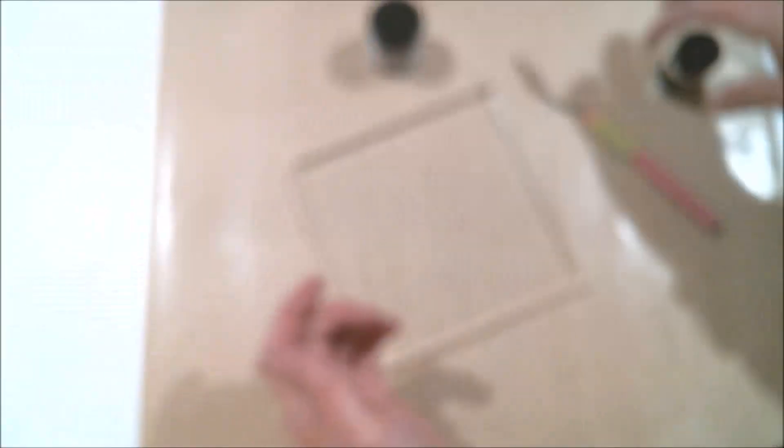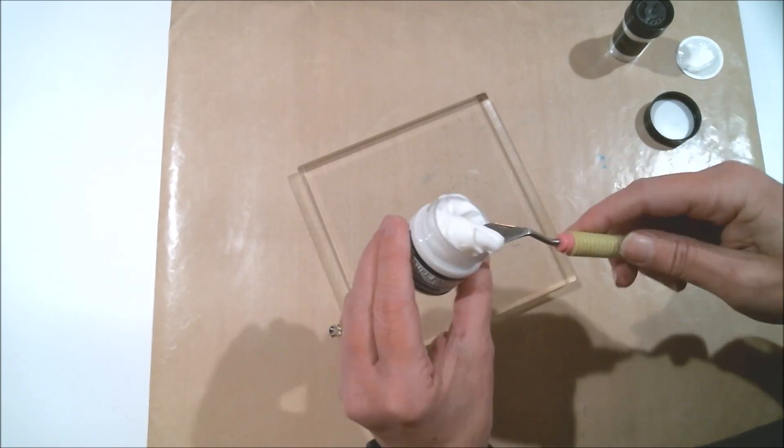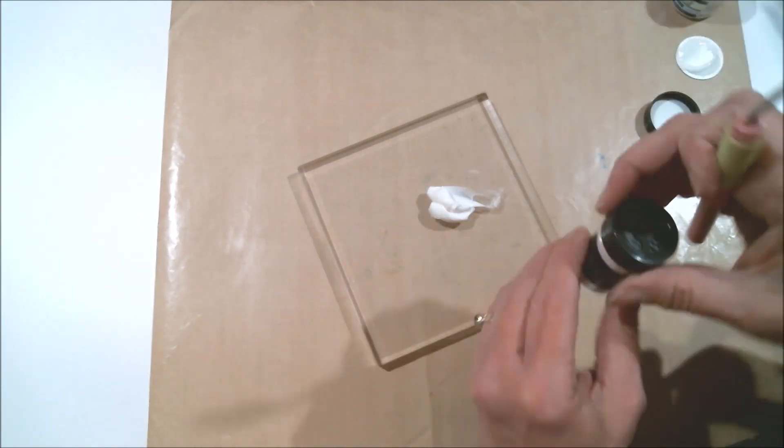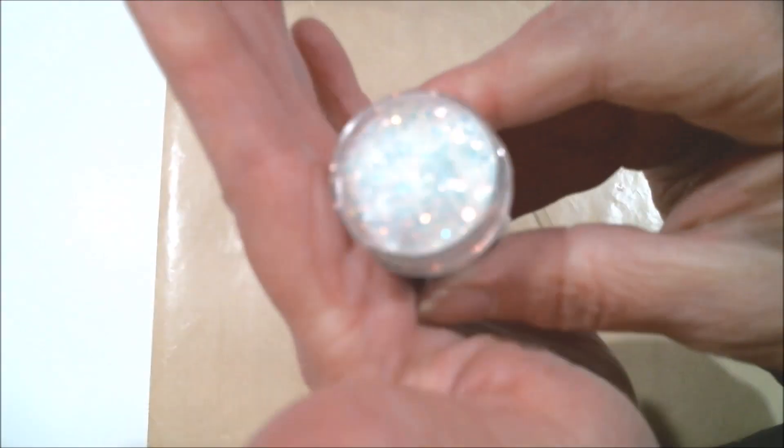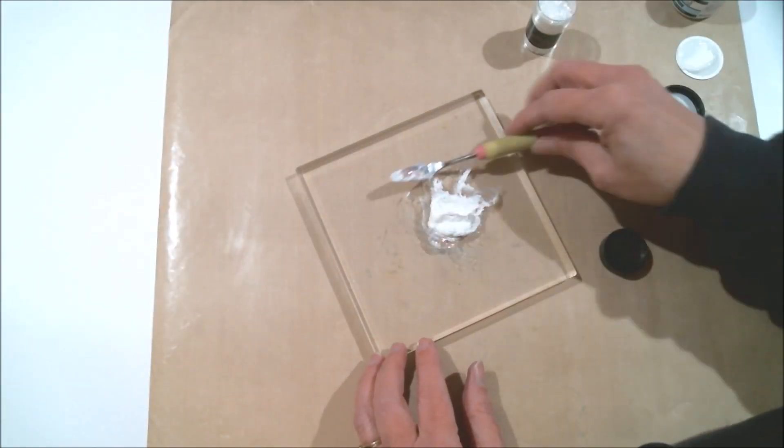Next I'm going to be mixing the Ranger Transparent Gloss Texture Paste with some of the Fairy Hugs Pixie Dust Confetti Glitter to create a beautiful sparkly paste to use with the Galaxy stencil to create a beautiful starry sky. And that is pretty much how I covered up the northern lights.